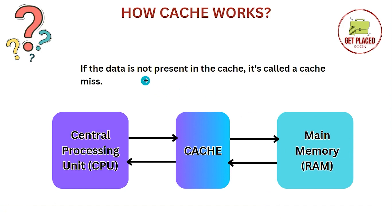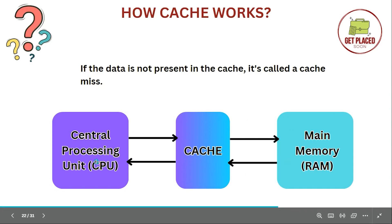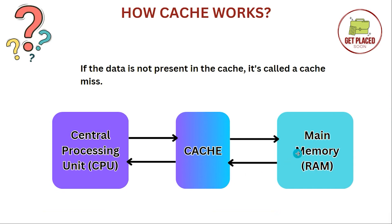What if the data is not present in the cache? That is known as a cache miss. In the case of a cache miss, the CPU has to fetch data from the main memory. While fetching it, two things happen: first, it sends the data to the CPU for its access, and second, it also stores a copy in the cache memory for future access.